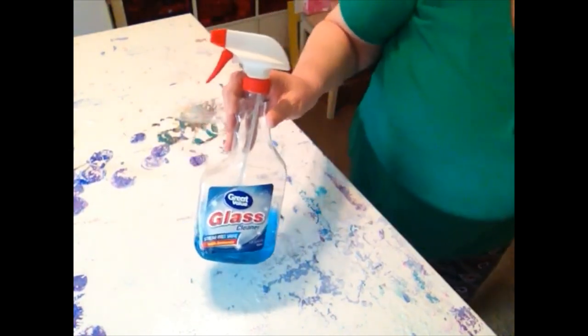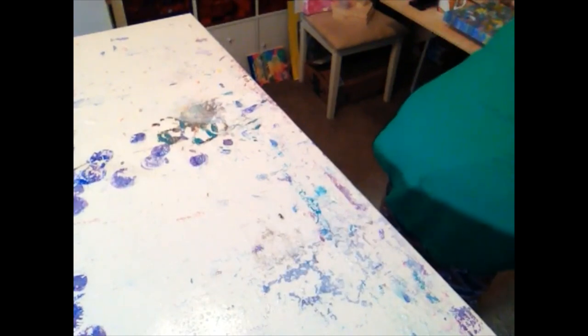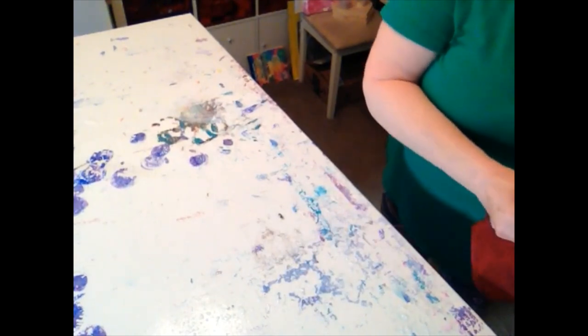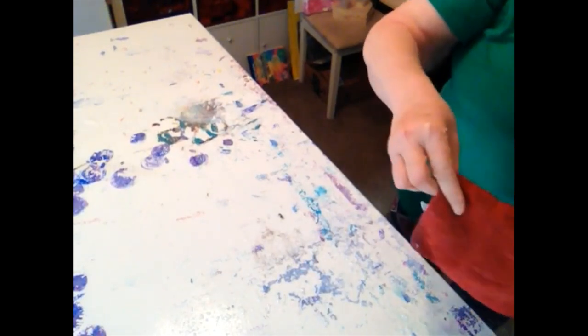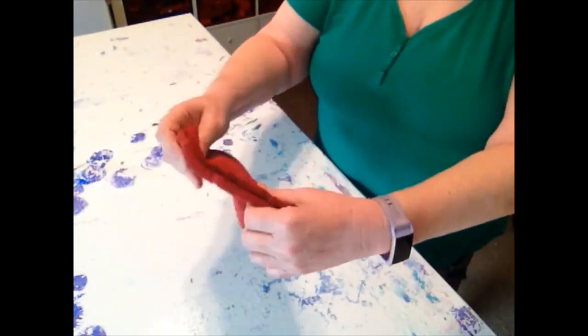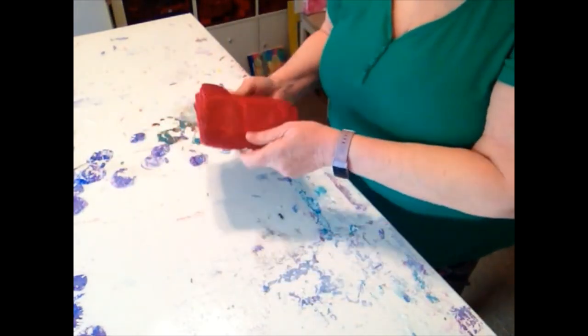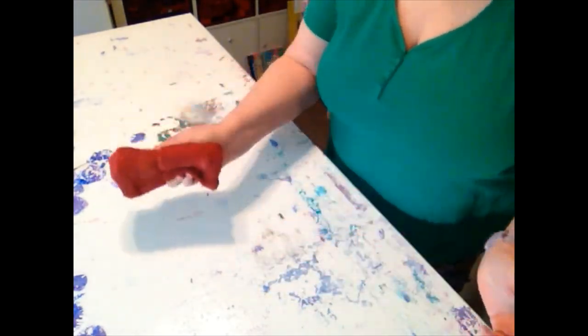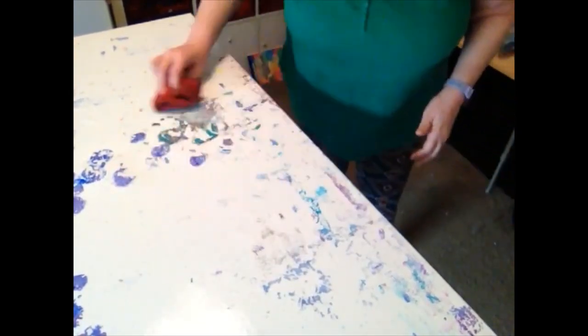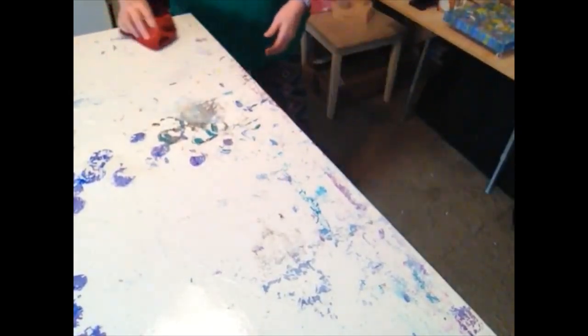Once I have that sprayed on, I just take a normal dish rag. This is one that I use for my painting. I just kind of fold it like this, and I just do a quick rub around of that cleaner, just to get everything covered good.